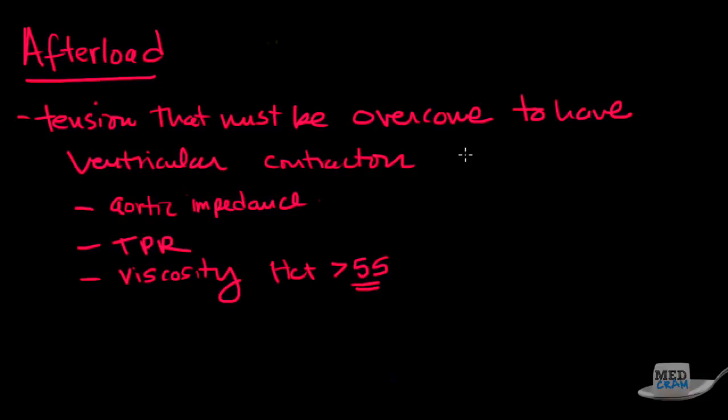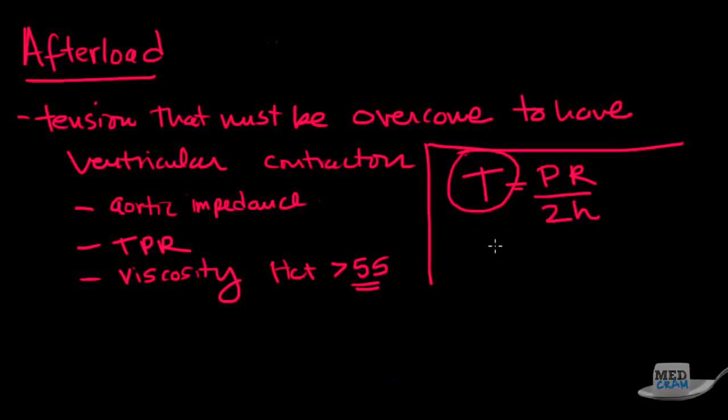The thing that you'll see quite a bit is this law of Laplace. Basically that is that tension is equal to the pressure and the radius divided by 2h. This is kind of what happens in hypertensive heart disease. Tension is basically the amount of contractile forces that have to be done in the heart to generate that pressure, to generate that force. P is the pressure that has to be generated against, this is kind of the afterload if you will. R is the radius of the inside diameter of the ventricle. And H is the actual thickness of the myocardium.